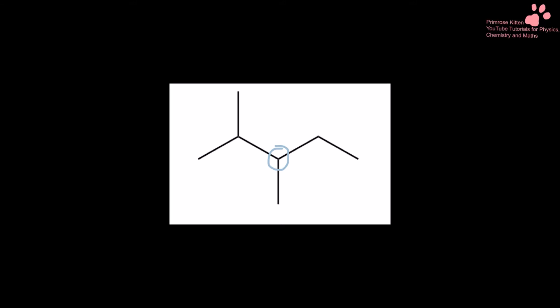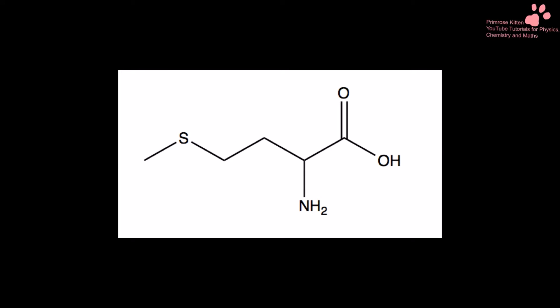If you want to have a go at naming these you can, but these molecules are going to get really, really complicated, so please don't get too hung up on that. Looking at this one here, moving along we can see this carbon - no, that's a sulfur - yes, because that's going to be one group, that's one group, that's one group, and we're going to have a hydrogen up here. So that one there is chiral. This one has a double bond, so it's not.